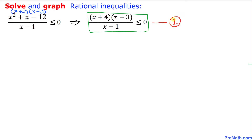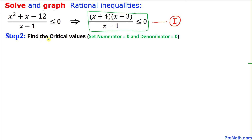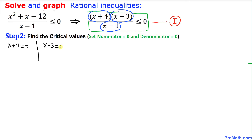In our next step we are going to find the critical values. To get the critical values we just need to set the numerator and the denominator equal to zero. So we are going to equate x plus 4 equal to zero, x minus 3 equal to zero, and x minus 1 equal to zero.